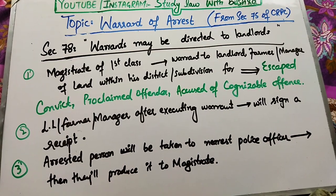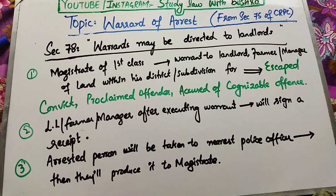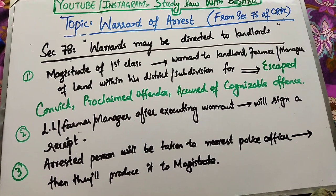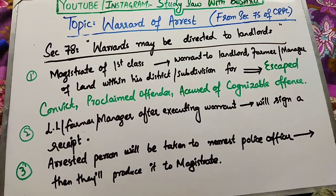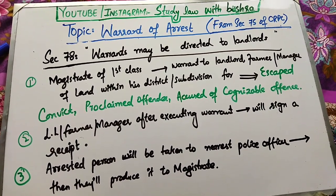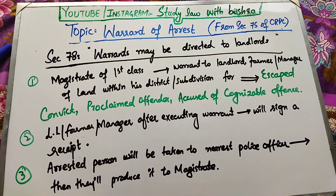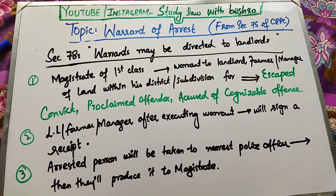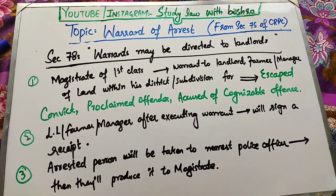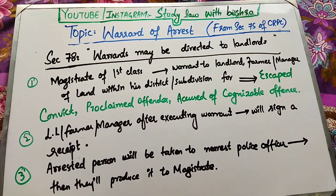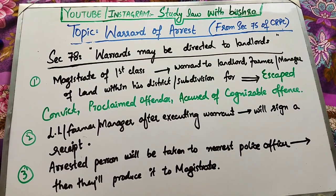Section 78 deal کرتا ہے Warrant may be directed to the land holder. First clause کہتی ہے کہ Magistrate of First Class کسی بھی land holder، farmer یا manager of the land کو — جو کہ اس کی district یا sub-division کے اندر ہے — warrant issue کرے گا، for any escaped convict، proclaimed offender، یا ایسا بندہ جس نے cognizable یا non-bailable offense commit کیا ہو.